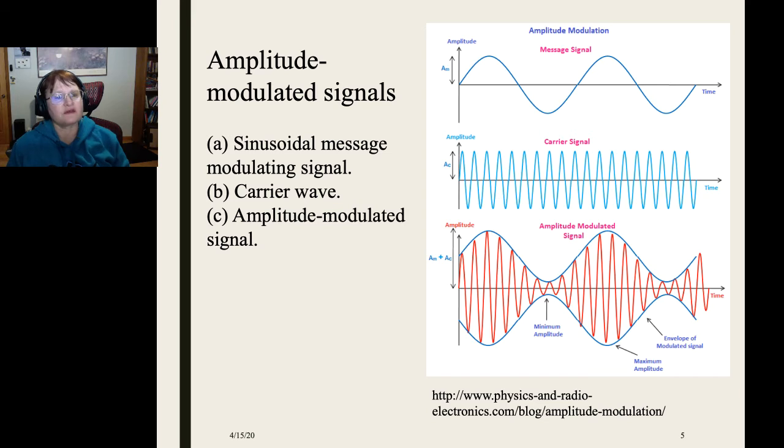So starting off in amplitude modulation systems, in this example our message signal will just be a simple sinusoid. And what we will do with the amplitude modulation is multiply the sinusoid of our message by a higher frequency carrier signal. The effect is to have the envelope of the signal, which is defined by the message, with the carrier inside, and you can see how the amplitude of the carrier is changing over time.